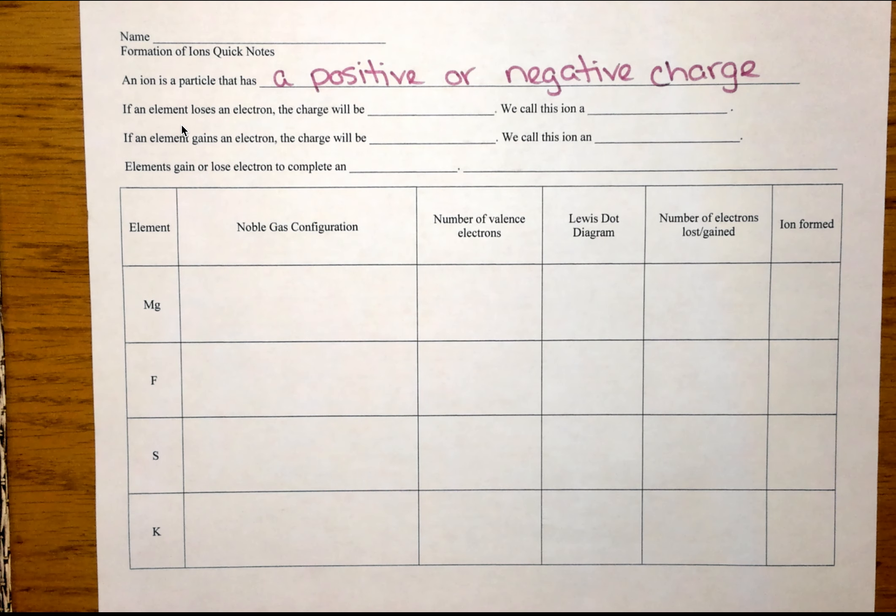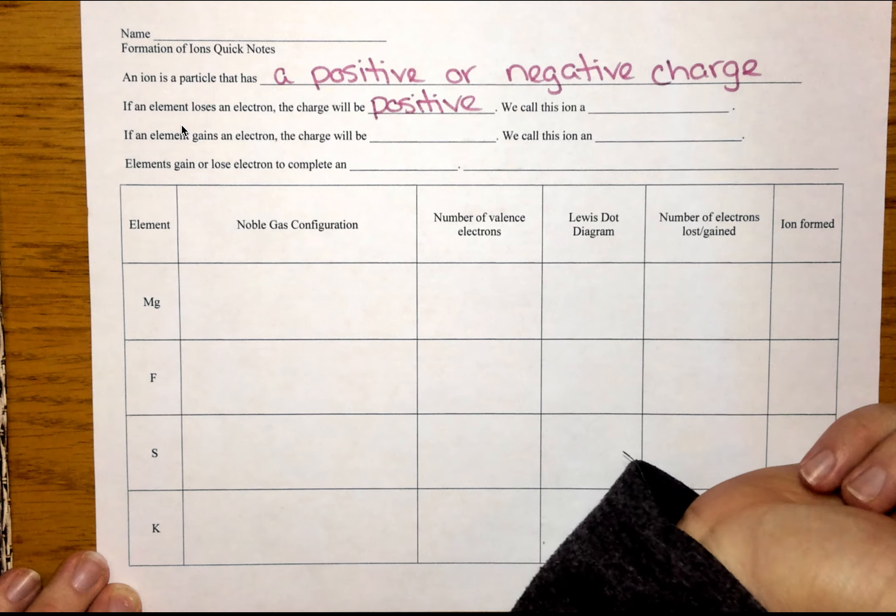So if an element loses an electron, so we're looking at losing a negative particle, the charge on that ion is now going to be positive.